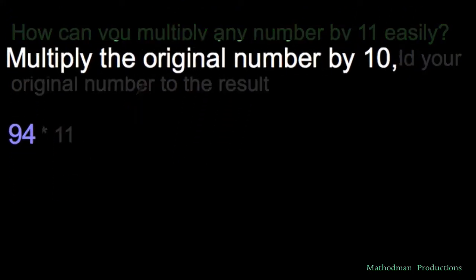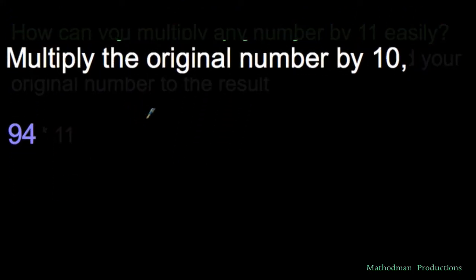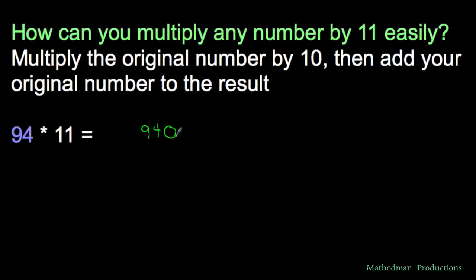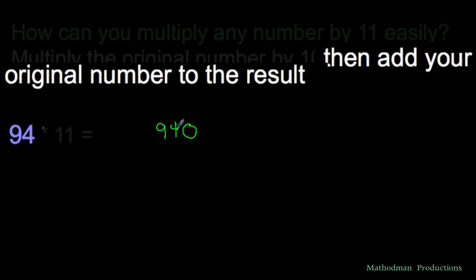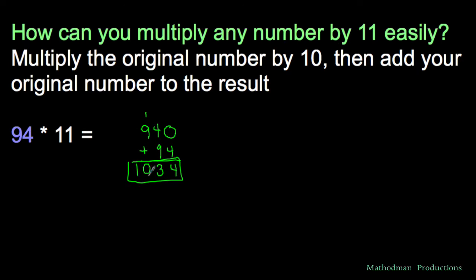Here is how you multiply by 11 really easily. First, take 94, the original number, and multiply that by 10. Move the decimal point one place to the right, or just add a zero if it's a whole number already. 94 times 10 is 940. Second step, add your original number. All I'm doing is adding what I began with, 94. Now that you have that, I get my answer. 9 plus 4 is 13, carry the 1. 1 plus 9 is 10. Boom! 94 times 11 is 1034. Easy day.